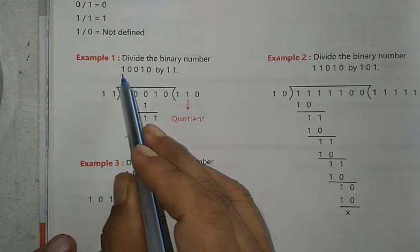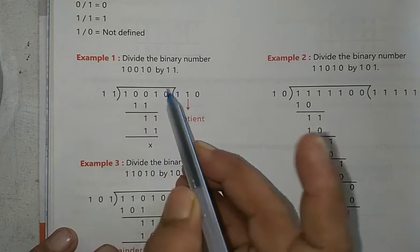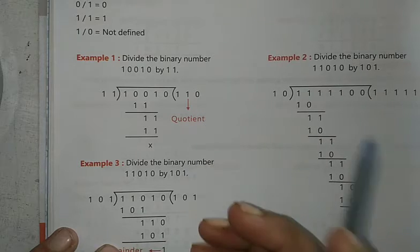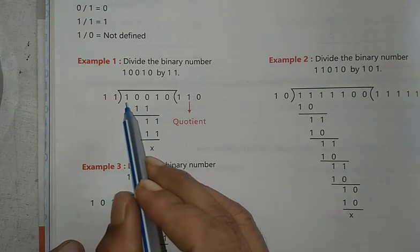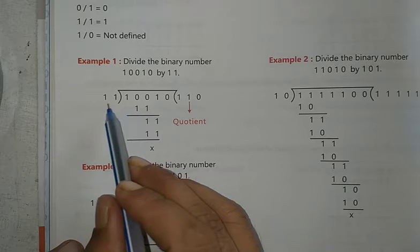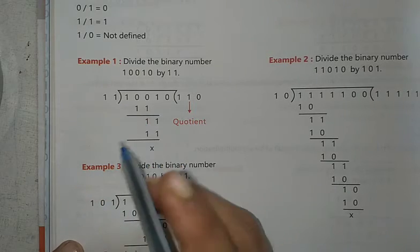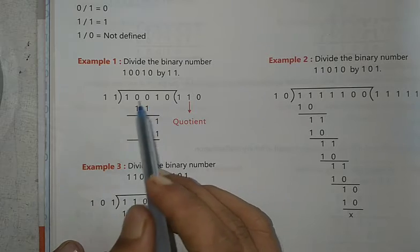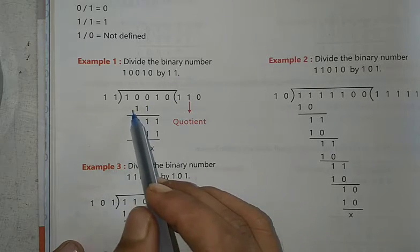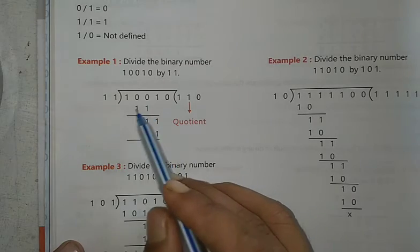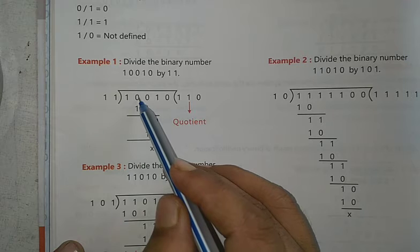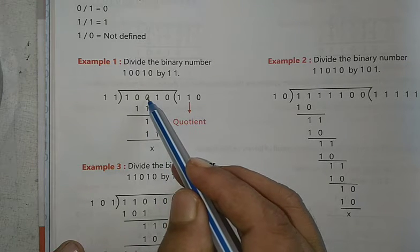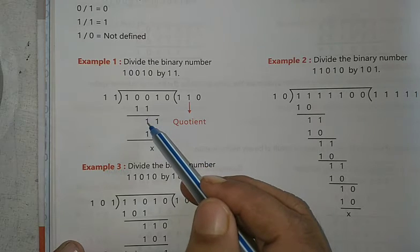Example 1: Divide the binary number 10010 by 11. We can see how we can do this. 11 goes into the number. If you have 1 less than 1, you need to carry the number.